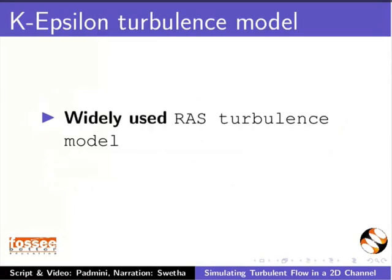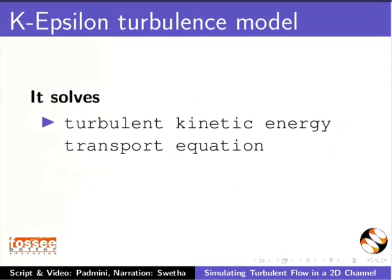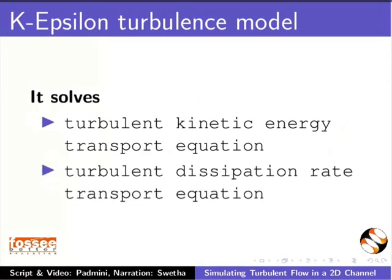K-Epsilon is a widely used RAS turbulence model. It is a 2-equation model. It solves the turbulent kinetic energy transport equation and the turbulent dissipation rate transport equation.